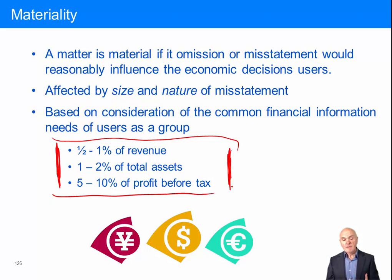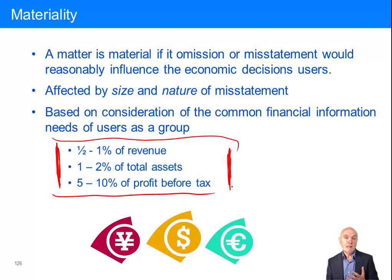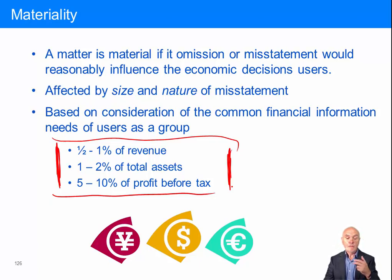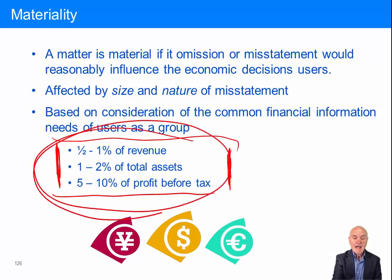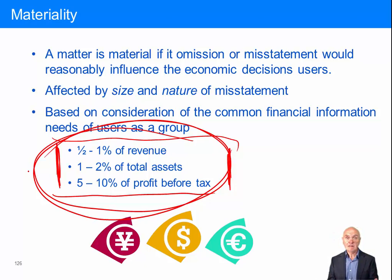The audit team goes out armed with this sort of information — what's called a preliminary estimate of materiality. This doesn't mean an item is material, but it's a good indication it's probably material. If you're ever in a question and get revenue figures, asset figures, and profit before tax figures, and are asked to consider errors in the financial statements, you would be expected to make calculations as to whether the errors discovered are large enough — material enough — to get excited about.